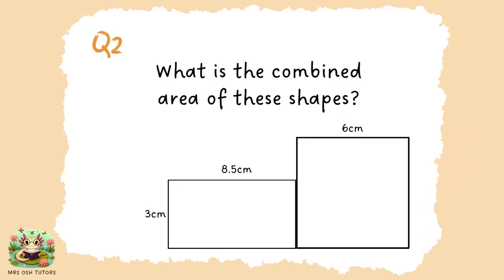Question two. Can you work out the area of this combined shape? There are two sections to the shape — work out the area of each, add them together. What is the total?